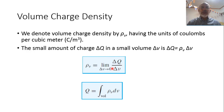Assuming we have an incremental volume ΔV, the limit of ΔQ over ΔV when ΔV tends to zero corresponds to this volume charge density. So ρv is the limit when the volume tends to zero of ΔQ over ΔV. Therefore, the small amount of charge ΔQ equals ρv ΔV.